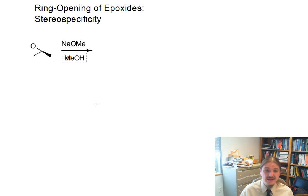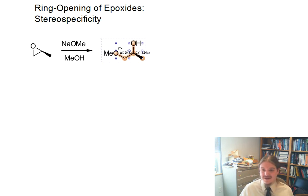The acidic version actually is also stereospecific. So it's one way that we know that while that reaction may be influenced by some carbocation-like character, it still is an SN2 mechanism because it preserves stereochemistry.